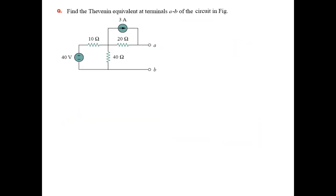We need to find the Thevenin equivalent at terminal AB, so we have to find voltage VAB and the resistance at this terminal. The voltage here will be the voltage across the 40 ohm resistance and the voltage across the 20 ohm resistance.